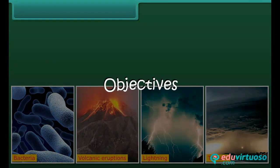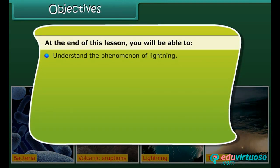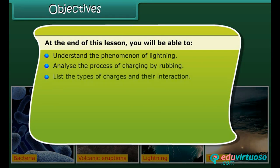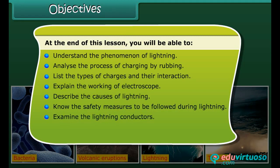At the end of this lesson you'll be able to understand the phenomenon of lightning, analyze the process of charging by rubbing, list the types of charges and their interaction, explain the working of an electroscope, describe the causes of lightning, know the safety measures to be followed during lightning, and examine lightning conductors.